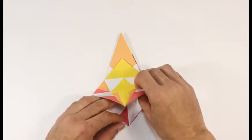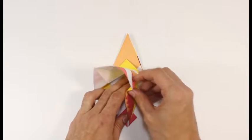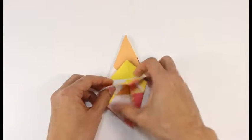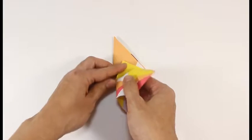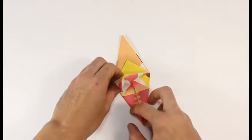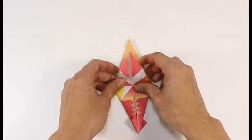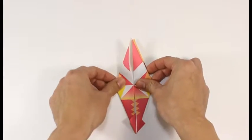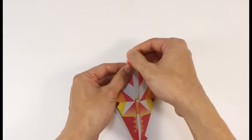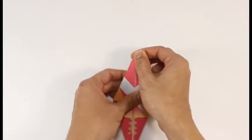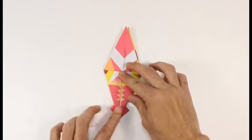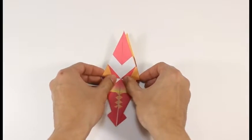Unfold and reverse these folds as well. Now we've completed an offset bird base.